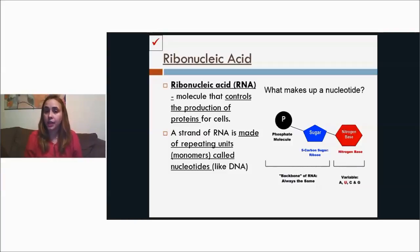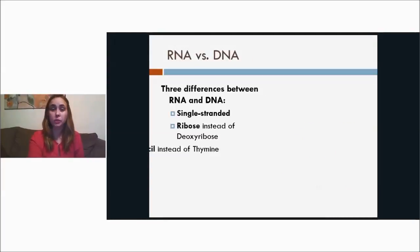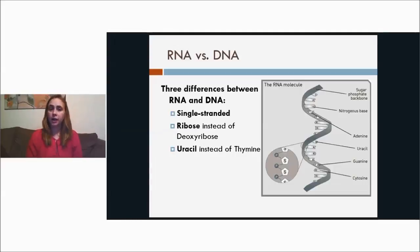And the nitrogenous bases, if you look below, you have A, U, C, and G. The U stands for uracil, and it replaces the base thymine. So the three main differences between RNA and DNA is that RNA is single-stranded, whereas DNA is double-stranded. We call it the double helix.